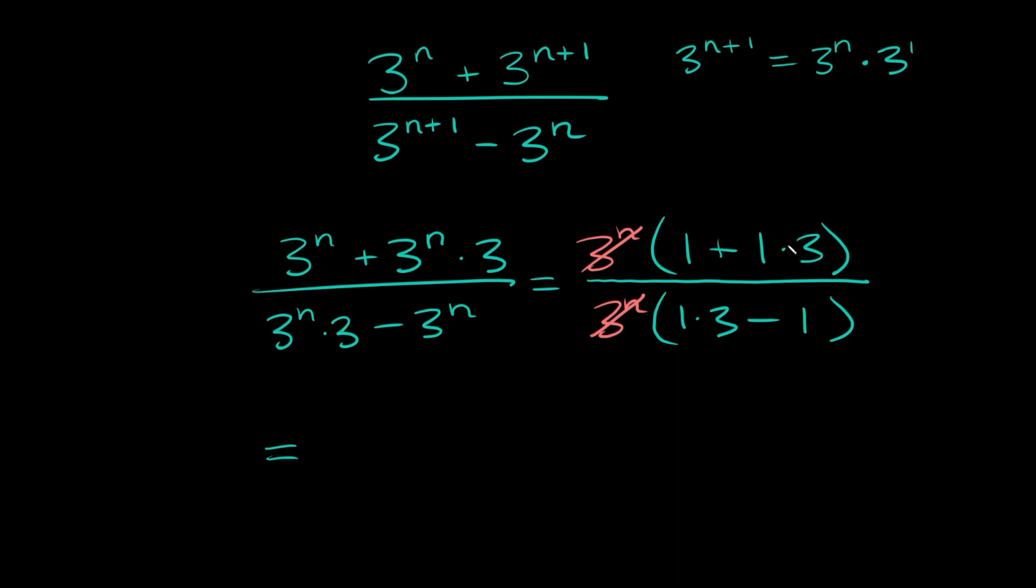1 plus 1 times 3, well remember PEMDAS. So let's do multiplication first, 1 times 3 is 3, so 3 plus 1 is equal to 4. So we have 4 on top and on the bottom, we have 1 times 3, which is 3 and then 3 minus 1 is equal to 2. So 4 over 2 is equal to 2. So then our answer right here would simply be positive 2.